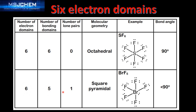Next we have six electron domains with five bonding domains and one lone pair of electrons. The molecular geometry is square pyramidal. The example is BrF5 — here's the Lewis structure. The bond angle is less than 90 degrees. This less-than-90-degree bond angle is caused by the extra repulsion of the lone pair of electrons on the bromine atom.